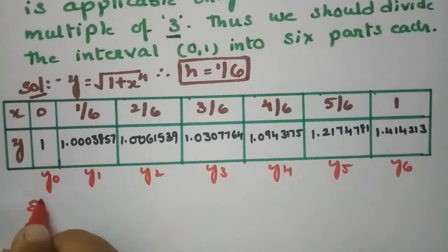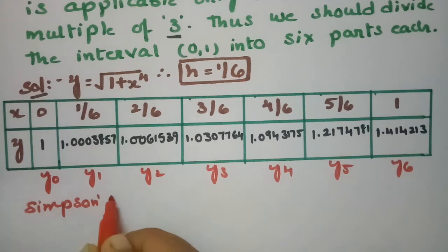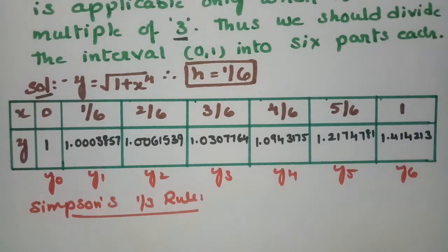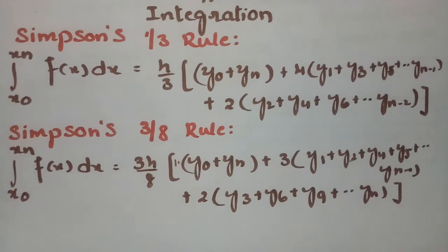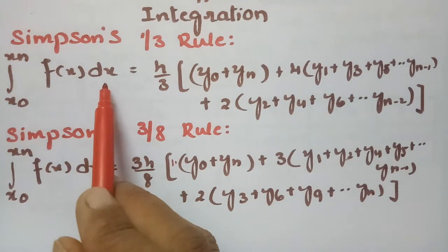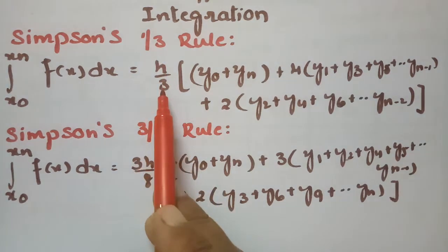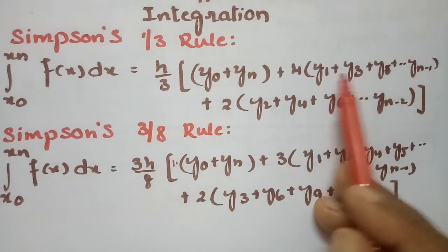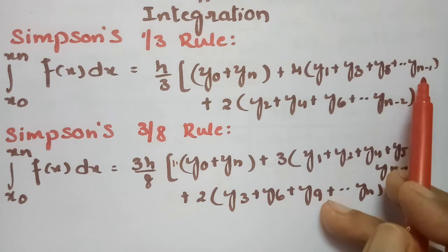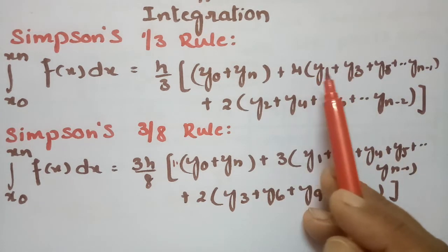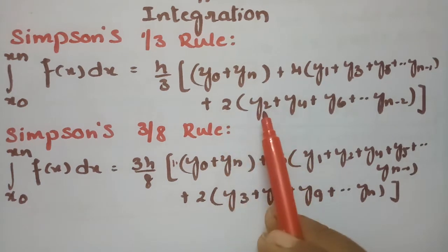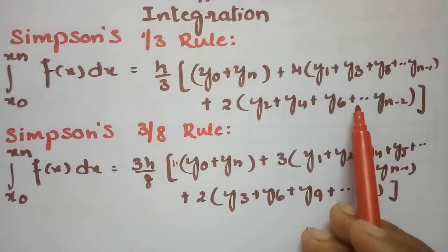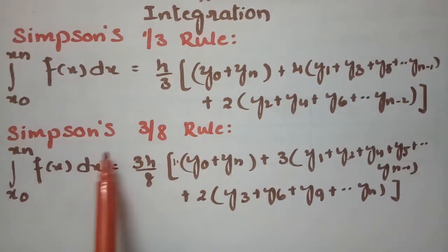Now I am going to use Simpson's 1/3 rule. According to Simpson's 1/3 rule, the integral from x₀ to xₙ of f(x) dx equals h/3 times: (y₀ + yₙ) — the first plus last ordinate — plus 4 times the sum of all odd ordinates (y₁, y₃, y₅, y₇, ...) plus 2 times the sum of all even ordinates (y₂, y₄, y₆, ...).